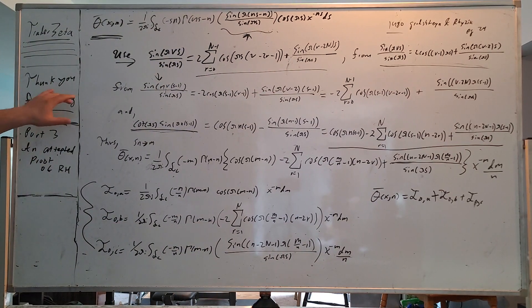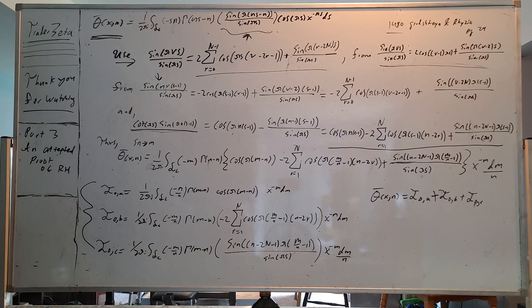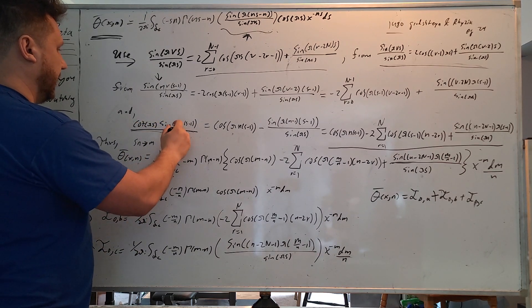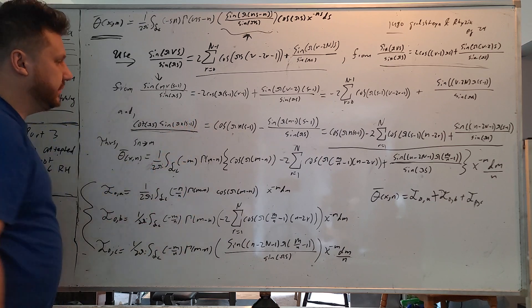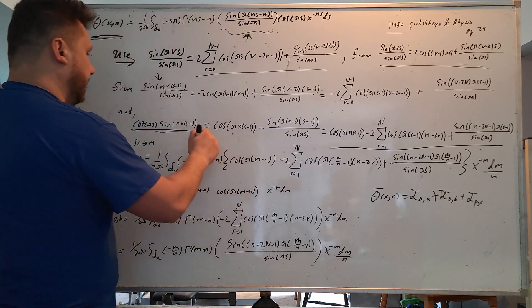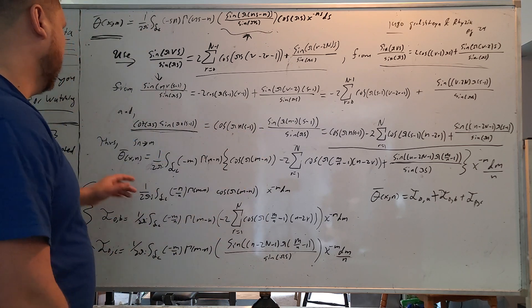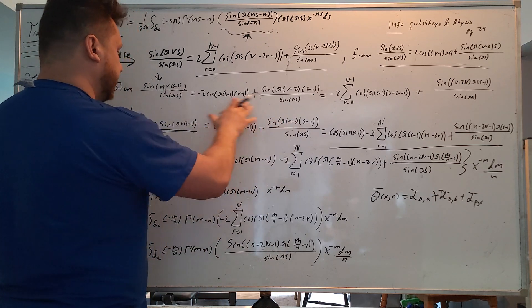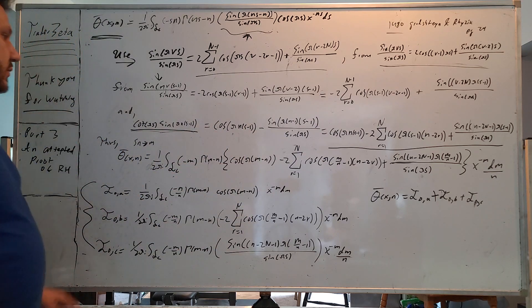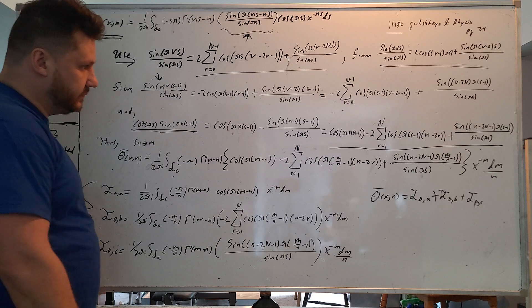The last trig identity here that we're going to really focus on is cotangent pi s times sin pi ns minus 1 equals this right here. This is, I think, easily verifiable. If you just multiply sin pi s on both sides, you can get to that result pretty easily in my opinion.